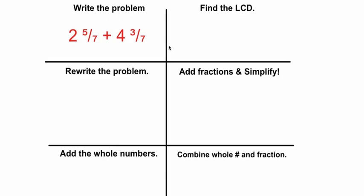Let's try one. So our diagrams changed a little bit. Instead of having four boxes we now have six boxes. So just like normal we're going to write the problem and just like normal we're going to find the least common denominator. So our denominators are seven and seven. Since those are already the same we can skip the step of finding the least common denominator. We can also skip the step of rewriting the problem because we already have common denominators.